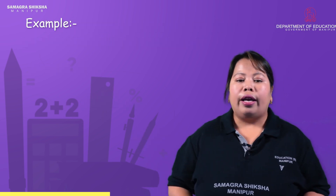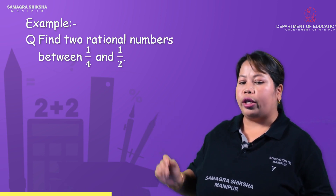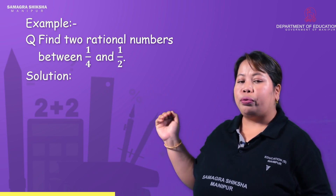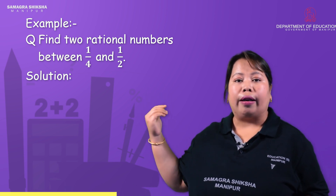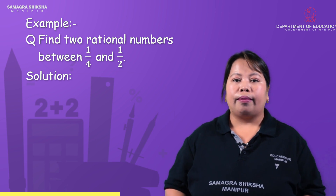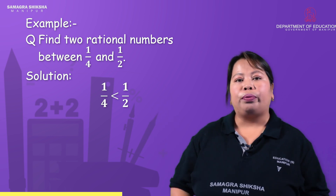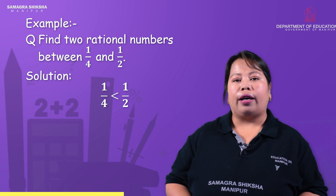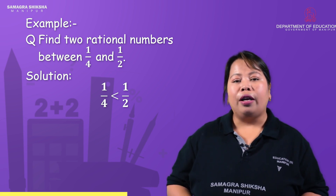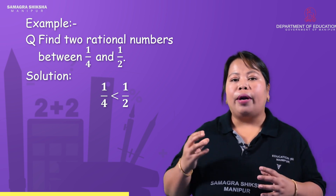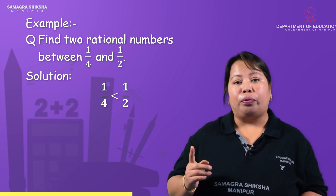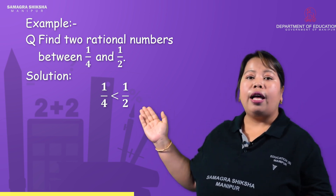Here are the examples. Find two rational numbers between 1/4 and 1/2. We are given that 1/4 and 1/2 are rational numbers. Since 1/4 is less than 1/2, we can apply the first method.